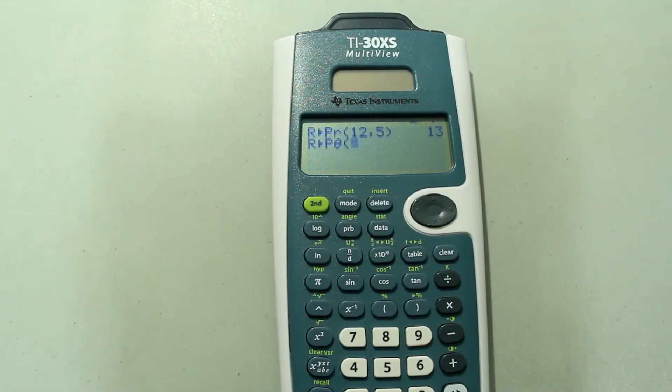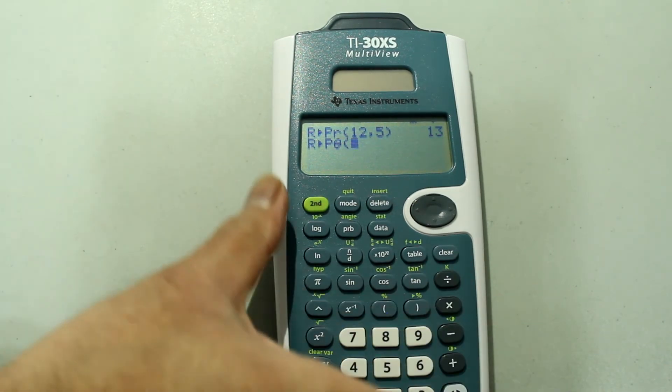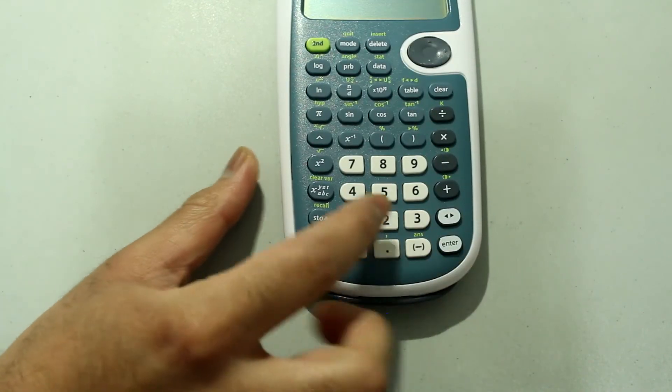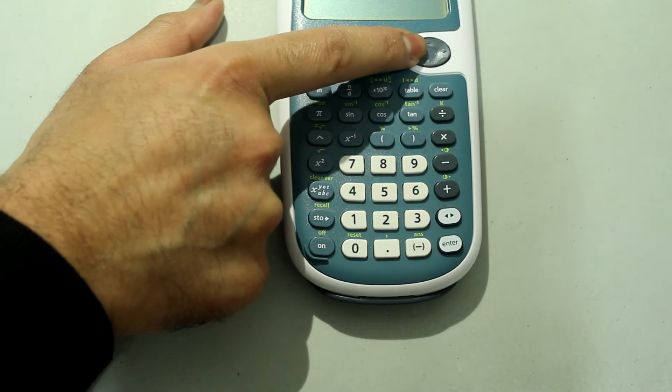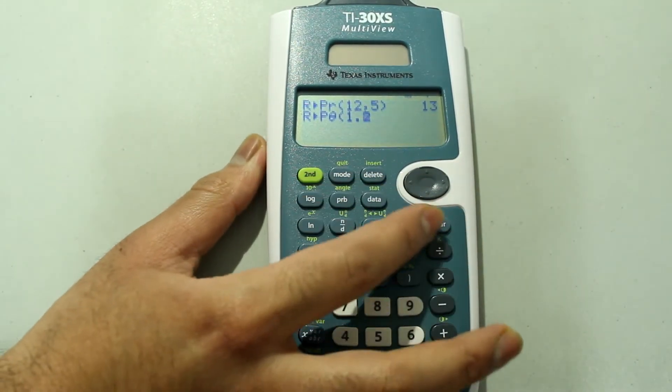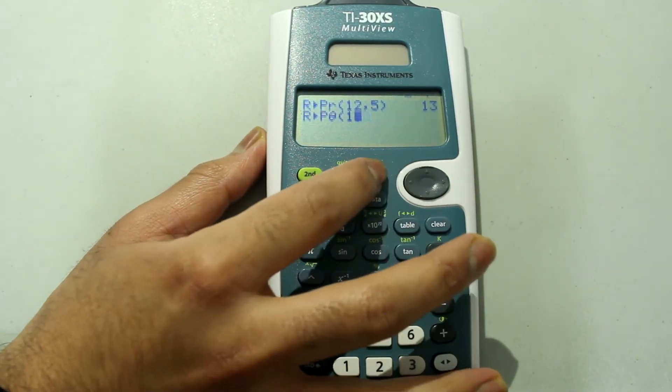So once again we're going to have to put in the rectangular inputs. So that's going to be 12 comma 5, so 12, oh sorry, I typed in a decimal by mistake. So I'm going to delete that portion.